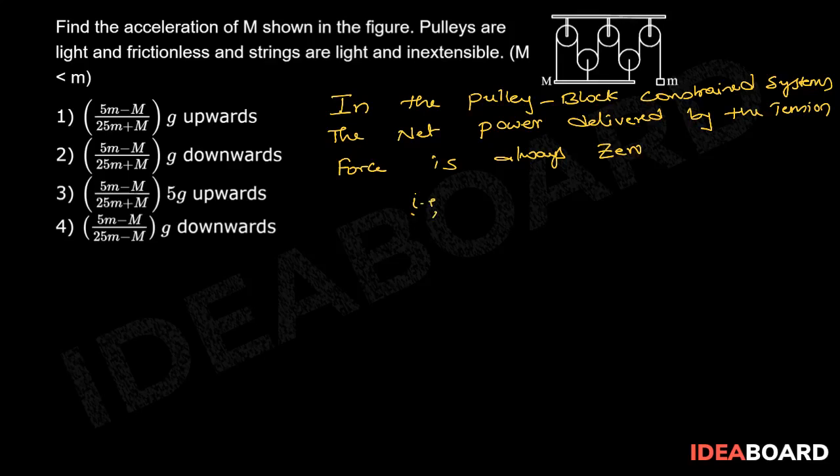That is, sigma T bar dot V bar is equal to zero. This can also be written as sigma of TV cos theta equals zero, where theta is the angle between the tension and velocity.